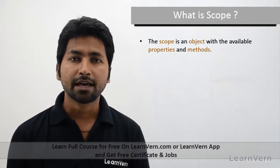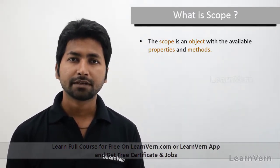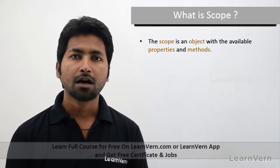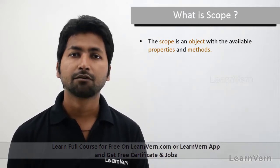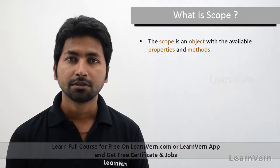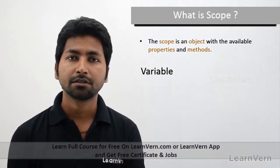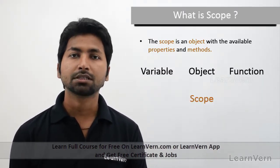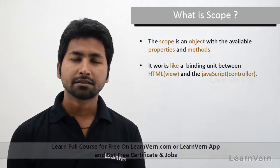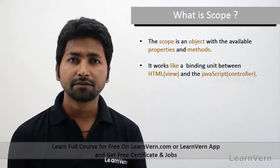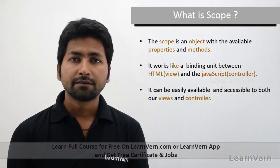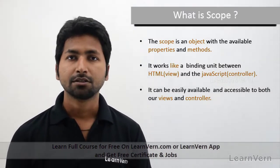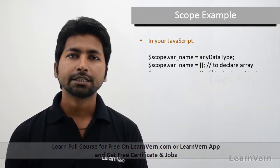First, what is scope? A scope is an object which has some properties and methods. Properties and methods can be described in your JavaScript file. Scope acts as a linking connector — it connects your view to JavaScript, so when you do some changes in scope, they are easily reflected in your model as well as in your template.